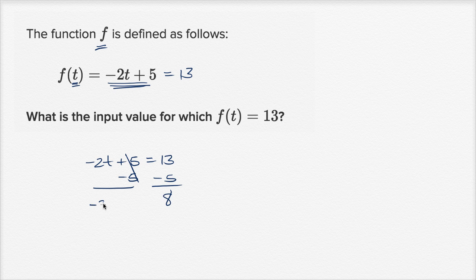And on the left-hand side, you still have your negative two t. So you have negative two t is equal to eight. Now to just have a t on the left-hand side, I want to divide both sides by negative two. And I'm left with t is equal to eight divided by negative two is equal to negative four.